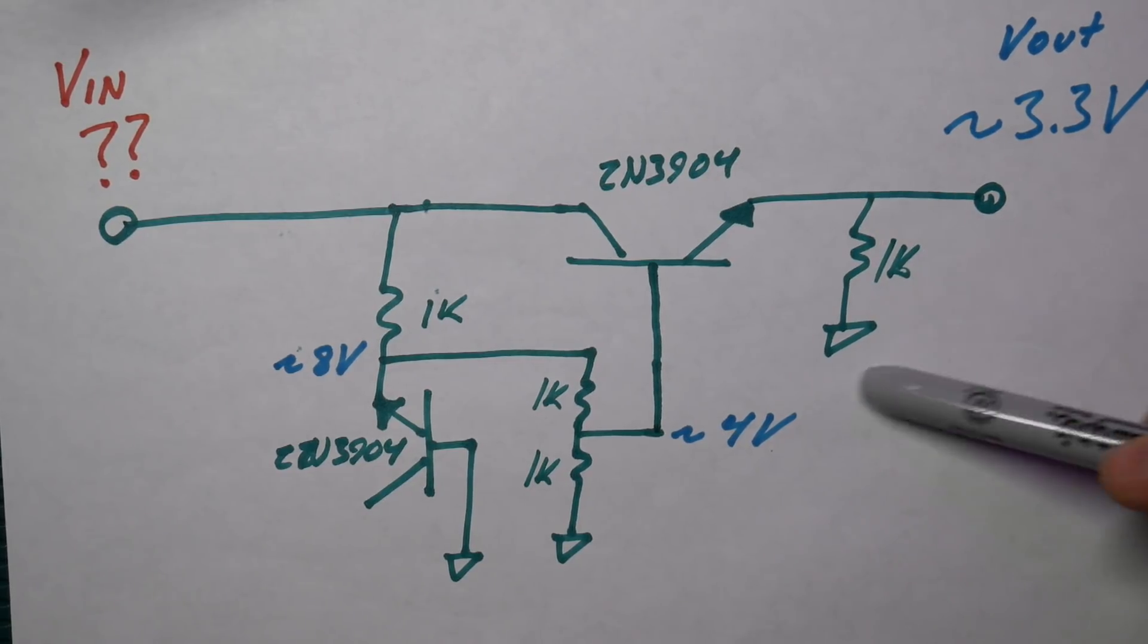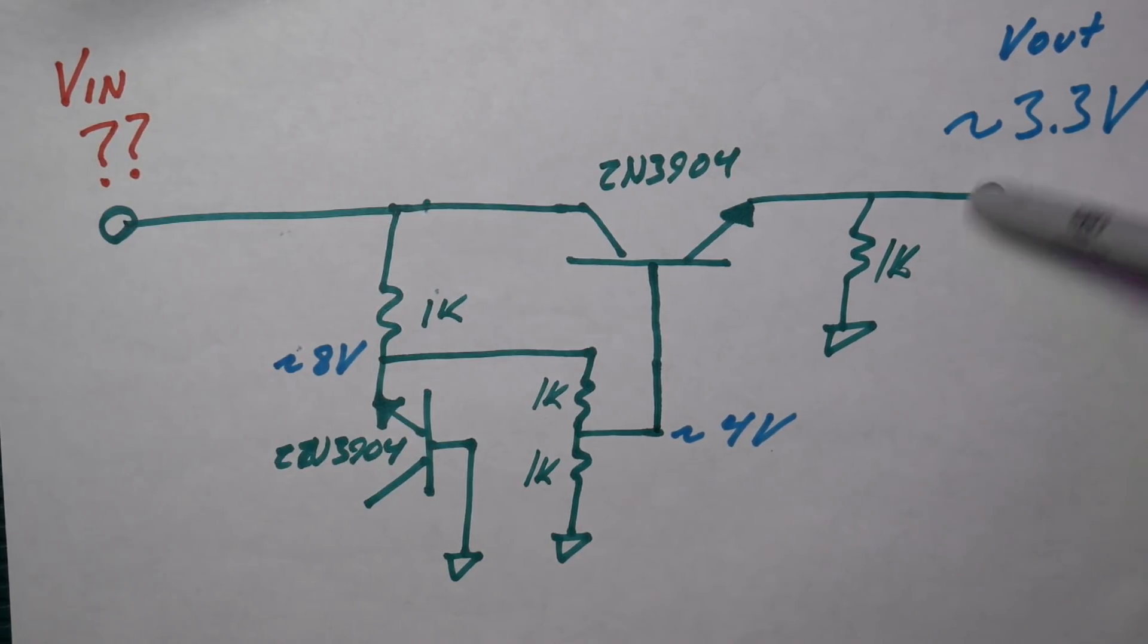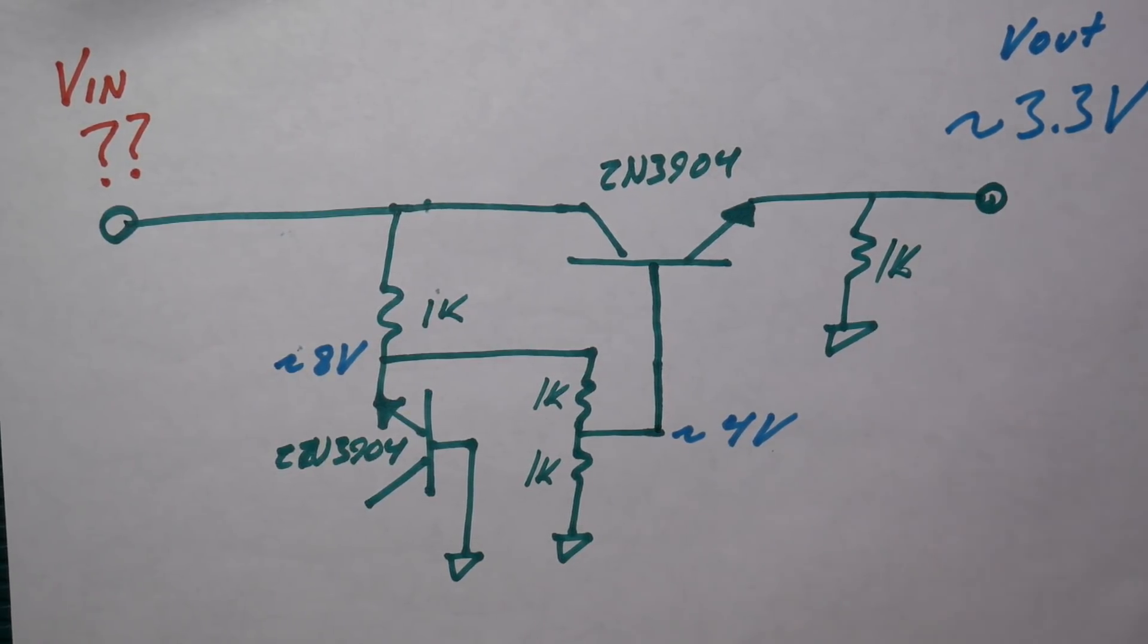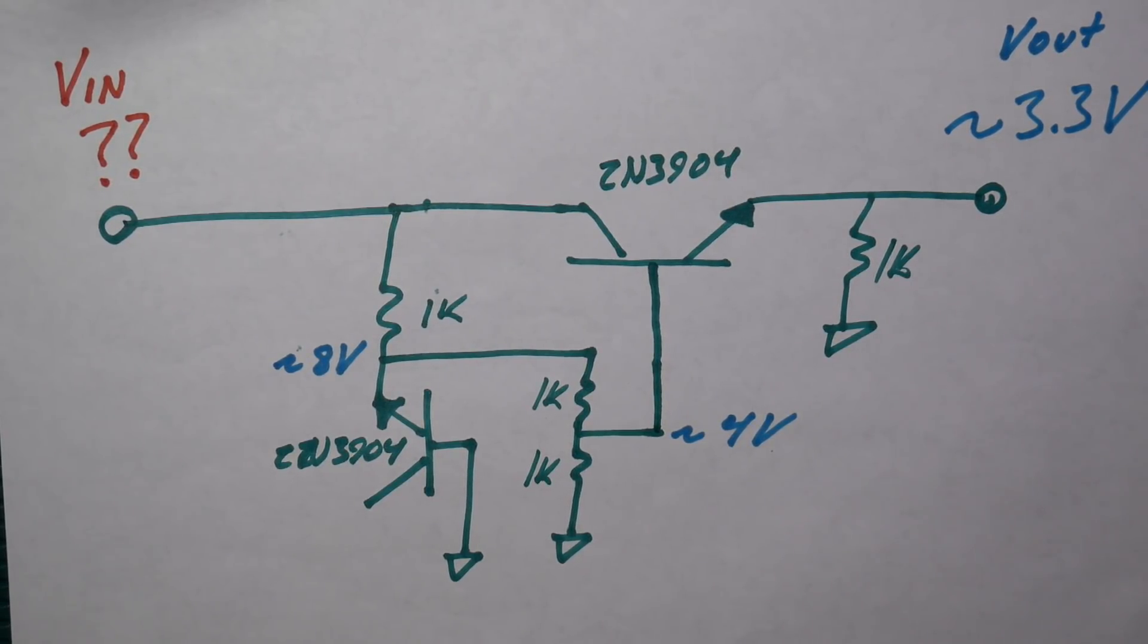I added the fourth 1k ohm resistor out here, just in case you don't have a load out here. It's going to regulate pretty high without any load. So I threw that out there just so it maintains the 3.3 volts. And that's all there is to it, really.